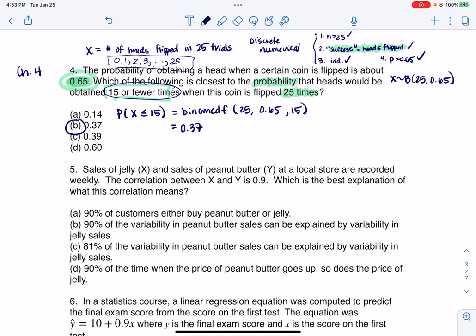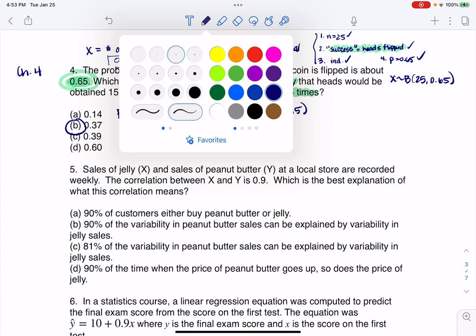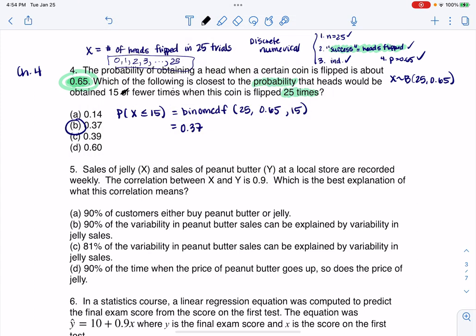Now I do want to say, let's pretend some things were just written differently just so we could practice this. What if this had just said 15 times? If it had said exactly 15, you would have put the equal sign here, and you would have done binomial PDF of 25, 65%, and then 15, and crunched that number. Let me give you another alternate.